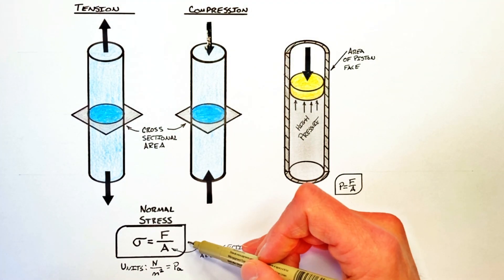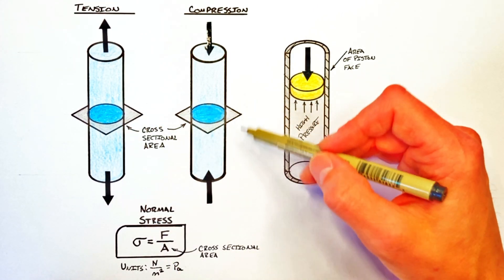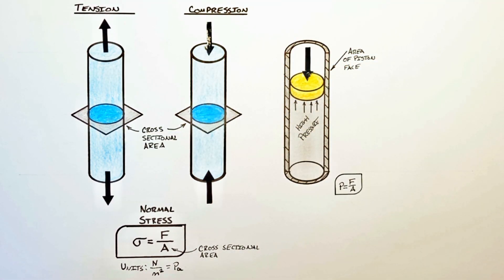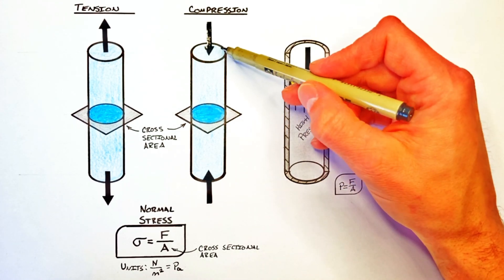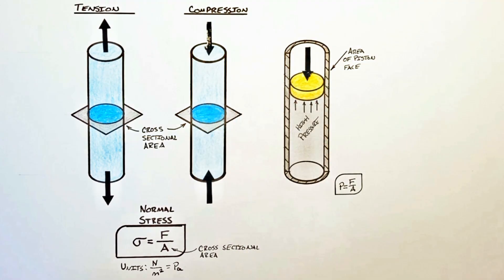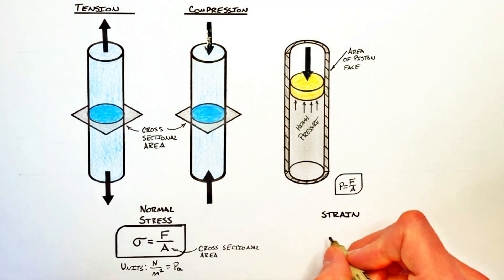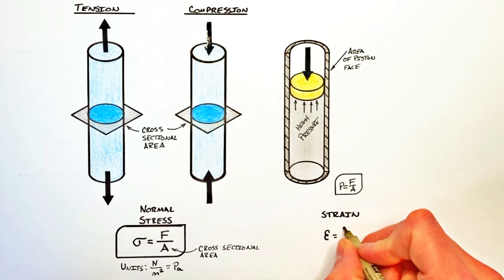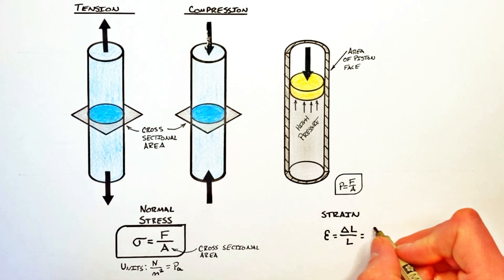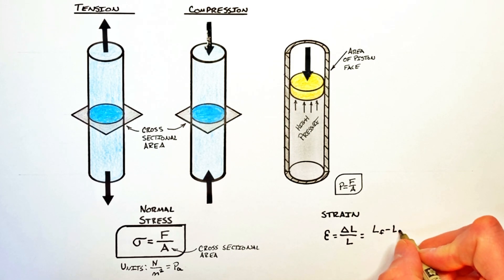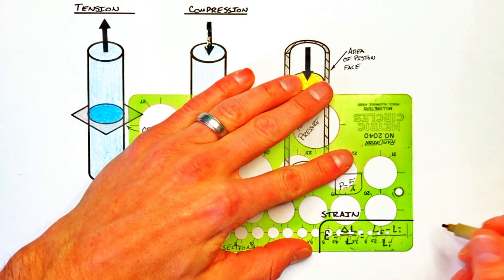This equation for normal stress can be applied to objects under both tension and compression, but realize there are some pretty major differences in what will happen to an object if you try to stretch it as opposed to compress it. When you push on a confined gas it compresses, and similarly when you push or pull on a solid part, it's also going to change size — and that leads us to something called strain. Strain is given by the Greek letter epsilon, which is equal to the change in length over the total length of a part. I prefer to write it as final length minus initial length divided by initial length — ultimately it's the same equation, just a bit more useful.